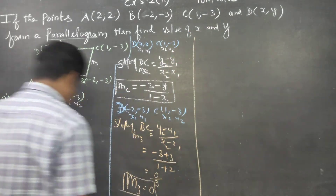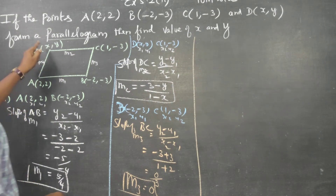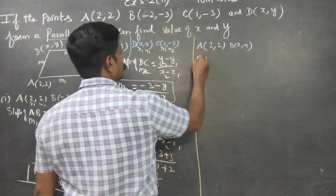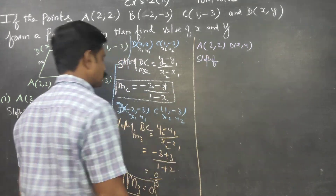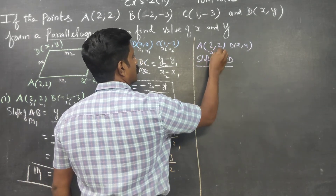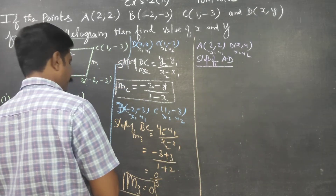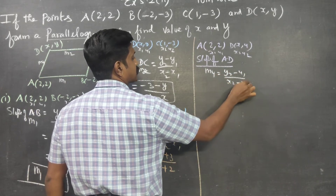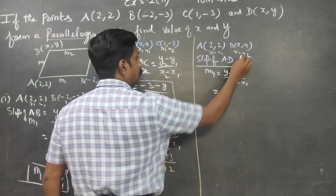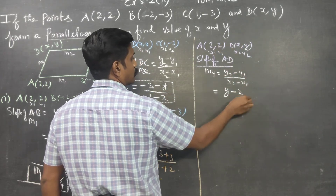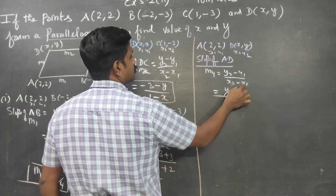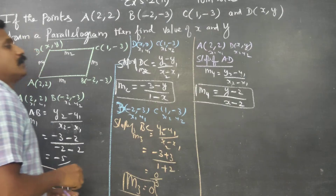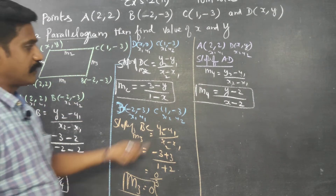Next, finding M4. A is (2, 2) and D is (x, y). This is x1, y1 and x2, y2. Slope of AD, M4. Formula: (y2 - y1) / (x2 - x1) = (y - 2) / (x - 2). All four slopes M1, M2, M3, M4 are ready.